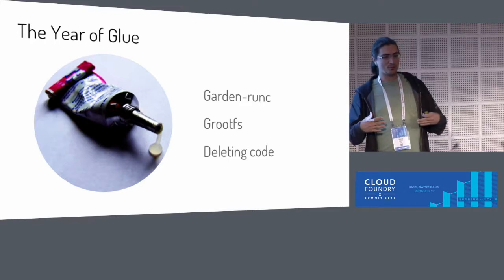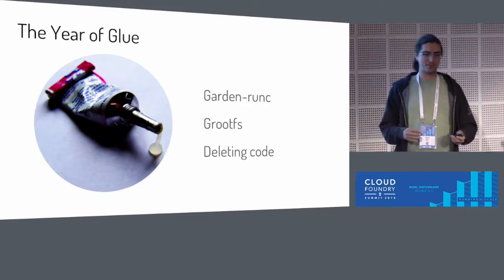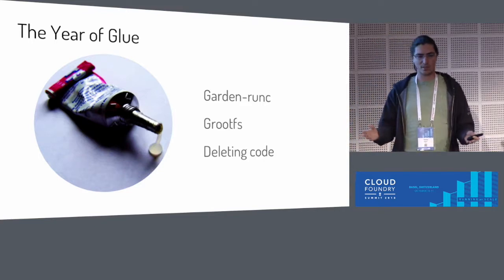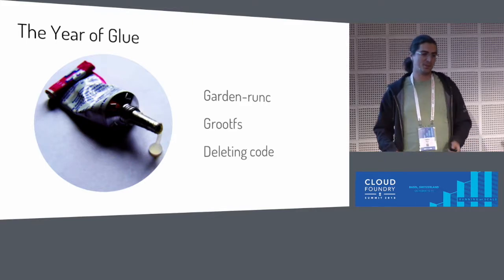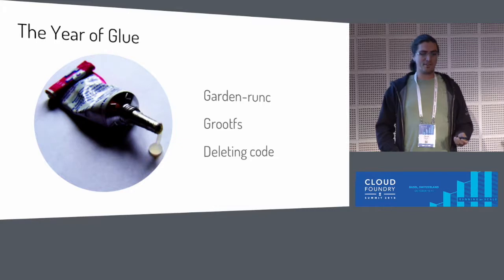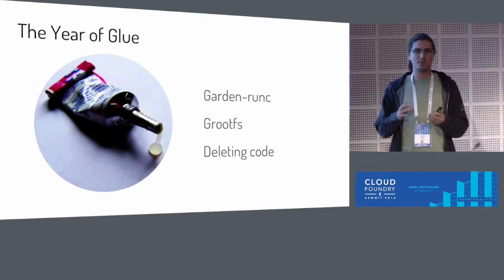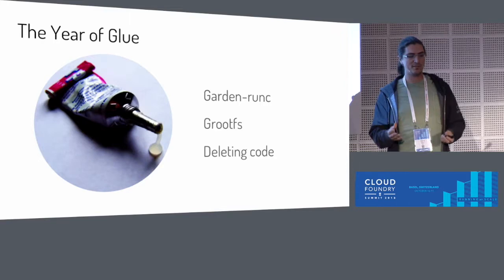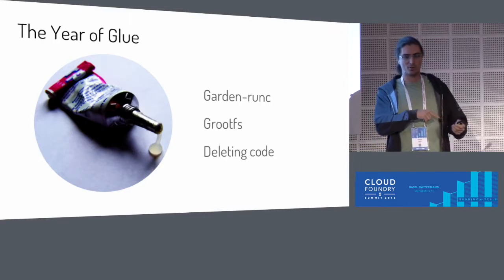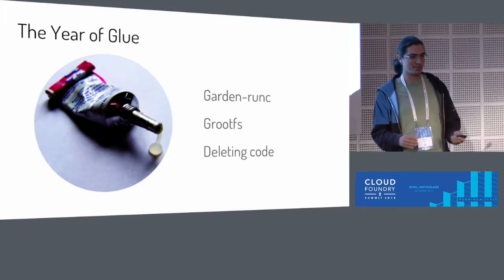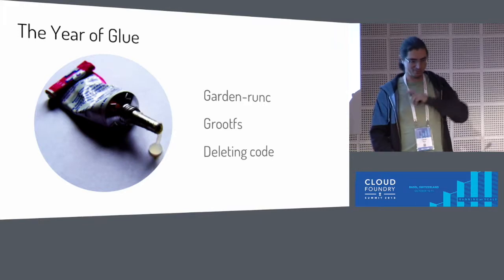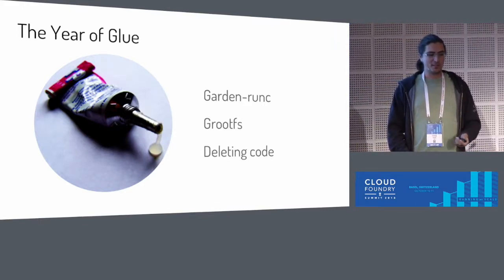So we immediately started building our next backend for the Garden API. This marked the beginning of the so-called year of Glue for the team — thinking about all the cool standards coming along and how to bring them to the platform. The results were that we built the next backend, Garden RunC, which wraps around RunC to run containers. We were able to delete a lot of in-house code. We also did another project called GrootFS — a replacement for our image manager, the one preparing the rootFSs. GrootFS replaced the old one called Garden Shed, which we really wanted to kill.